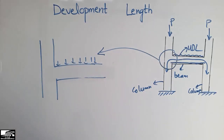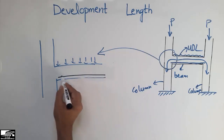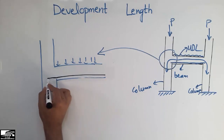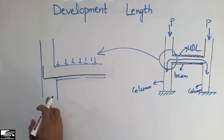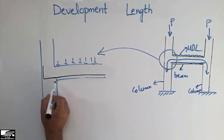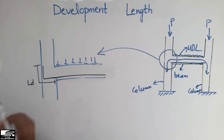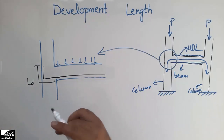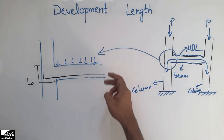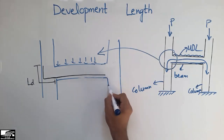I want to transfer this load into the column, so I will extend the steel bar provided in the beam from the beam into the column. We call this extended bar — which is now inside the column — the development length. This length is called the development length, represented by LD, and this length has its own equation to find the development length for any steel bar.